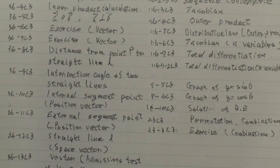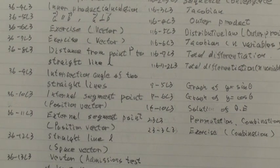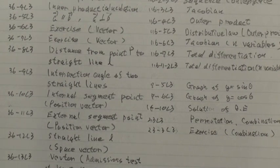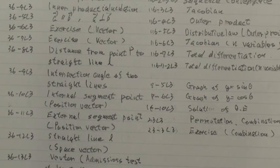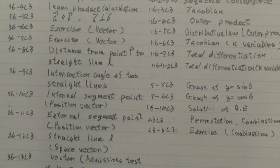23RT, Permutation, Combination. 23 branch TLT, Exercise, Combination.